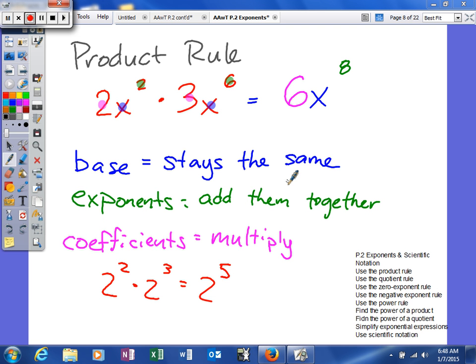Next we're going to talk about the product rule. As you can see, we have 2x squared times 3x to the sixth.